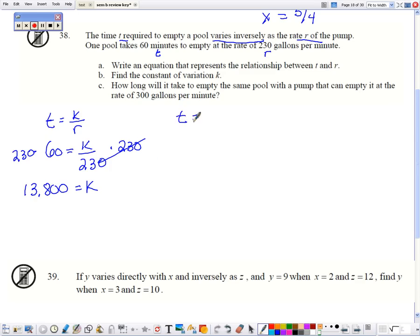So then writing our equation with k substituted in, then we have to solve for when 300 gallons. So that's 300 gallons per minute is our rate. So 13,800 divided by 300 is 46 minutes.